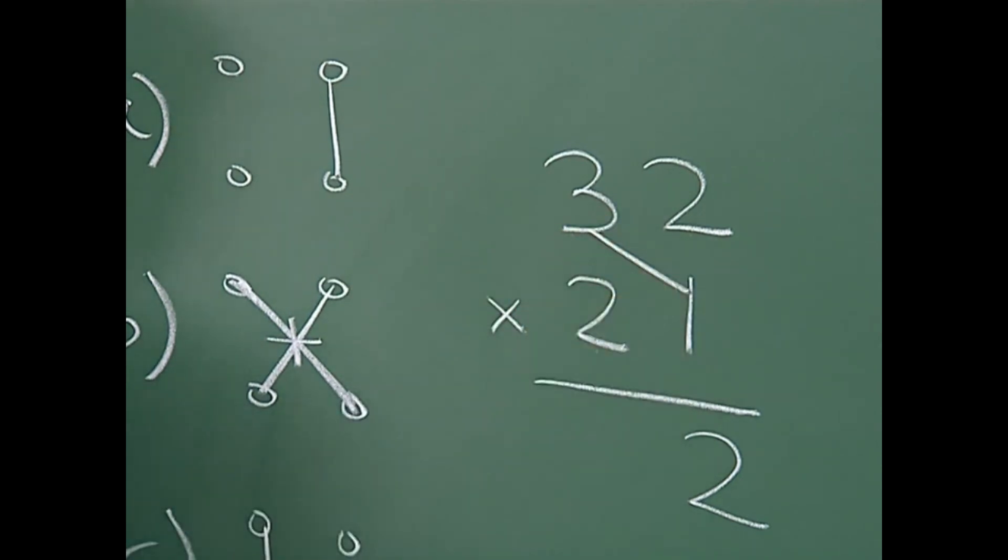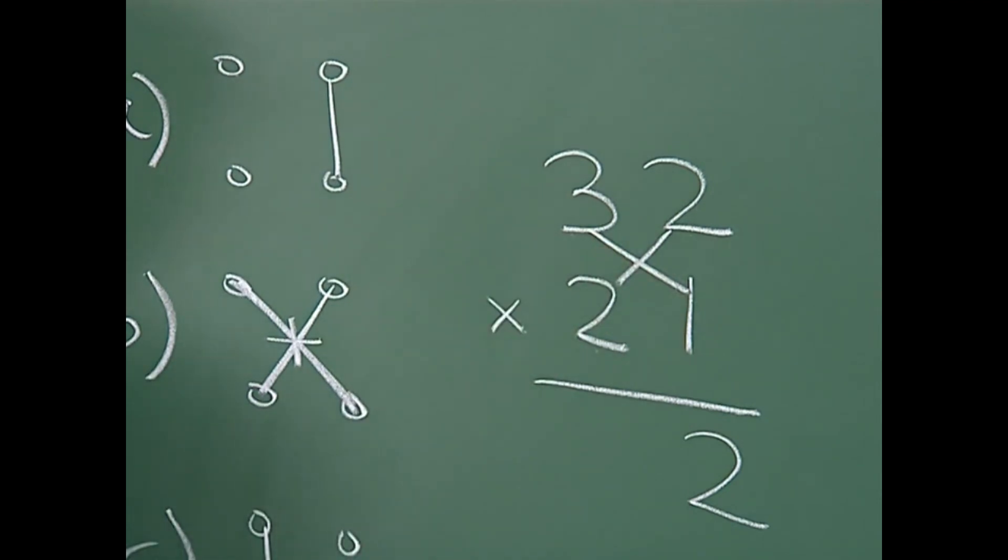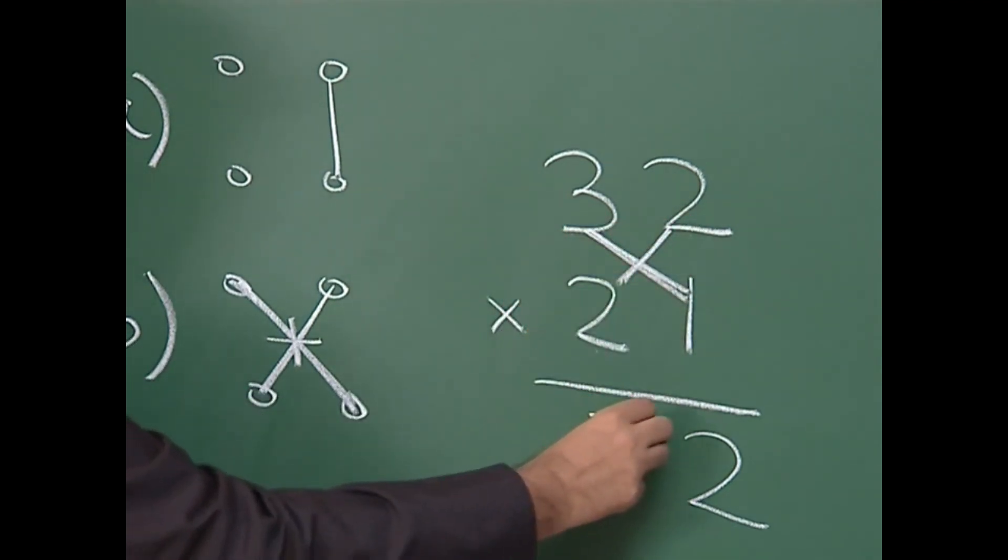3 times 1 is 3. Keep it in your mind. 2 times 2 is 4. 3 plus 4 gives 7.